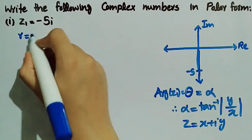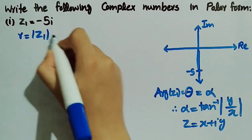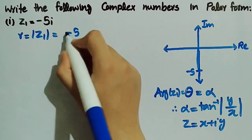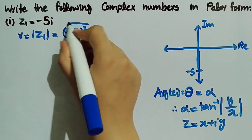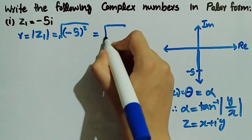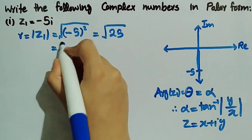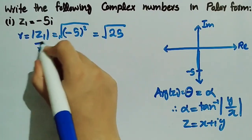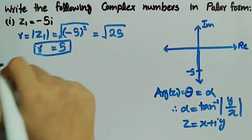First, we will find r, which is equal to mod of z1, which is equal to the square root of minus 5 squared, which is equal to the square root of 25, which is equal to 5. So r is equal to 5.